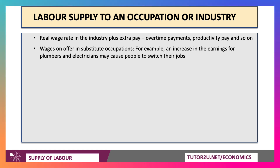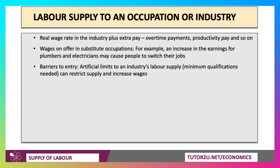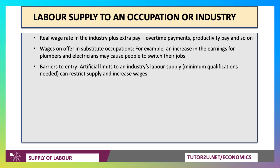Another factor affecting labour supply is the wage or income on offer in substitute competing occupations. If the earnings of plumbers and electricians go up, that might cause people to switch jobs — for example, move out of teaching. Barriers to entry also affect labour supply. There could be artificially imposed limits or constraints, such as minimum qualifications, a degree-only occupation, or the need to pass professional or trade exams. That can restrict supply and increase average wages.